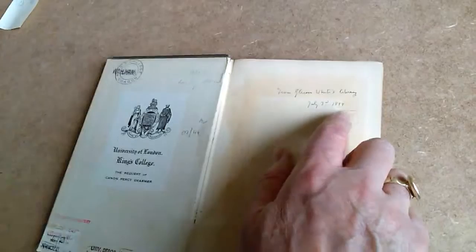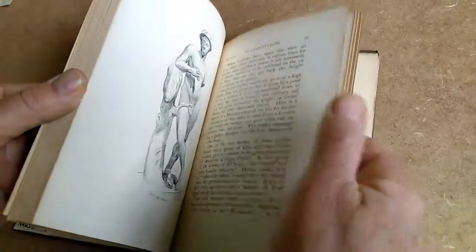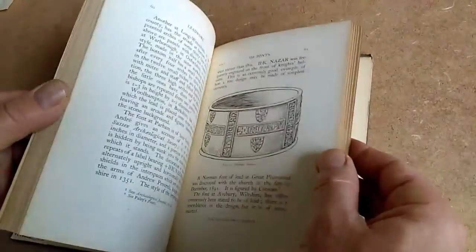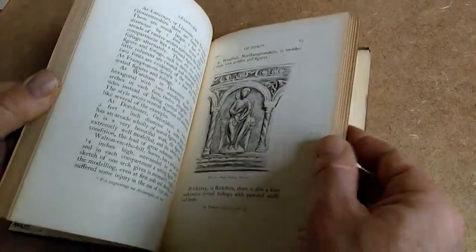And here, inscribed by Dierma, is from Gleeson White's library, July the 3rd, 1899. Gleeson White was a writer on connoisseurship, the arts, and he was the first editor of The Studio, which was the highly influential magazine for the arts and crafts movement.